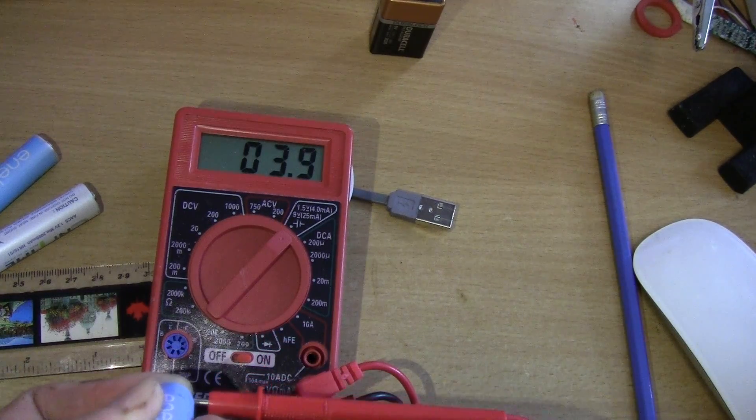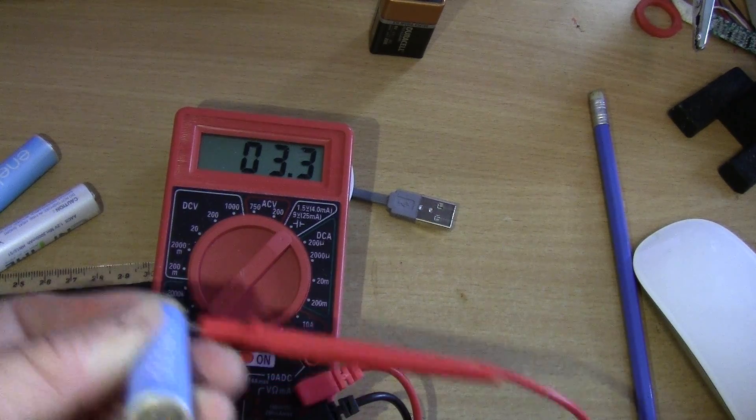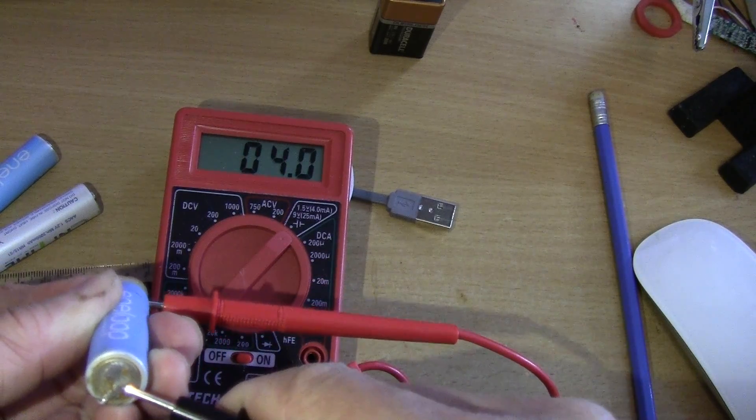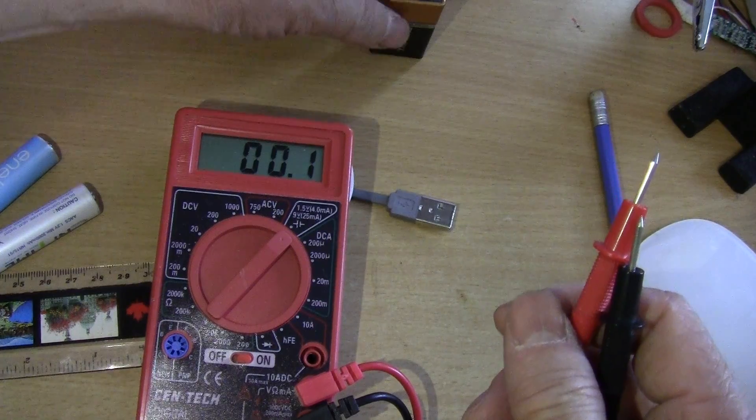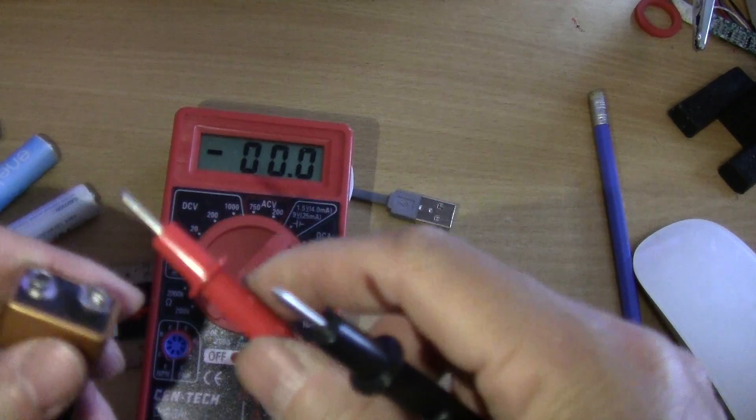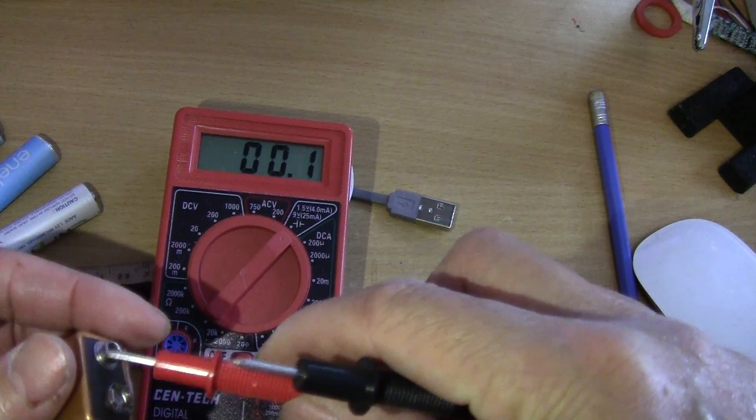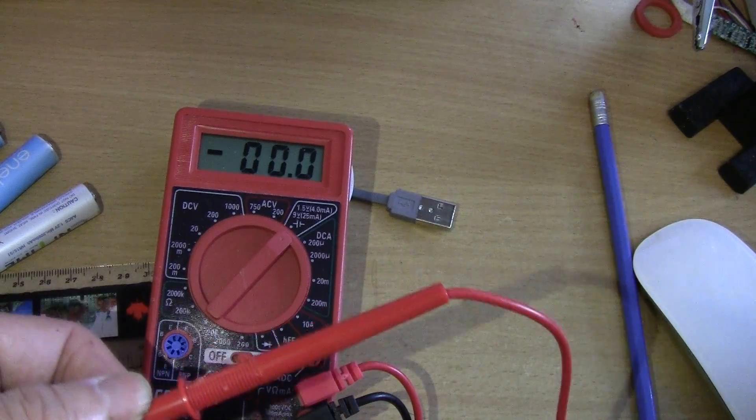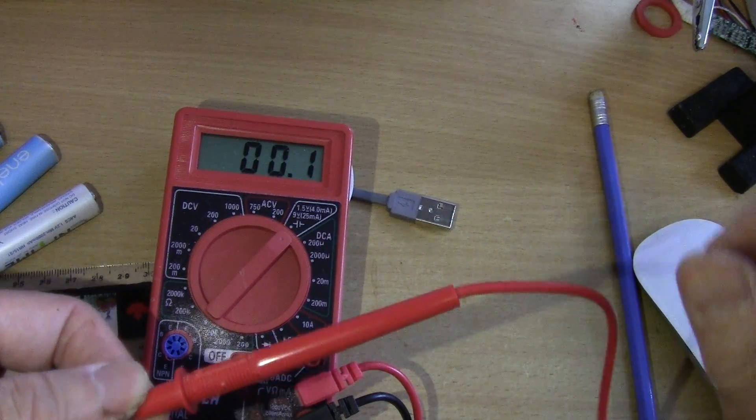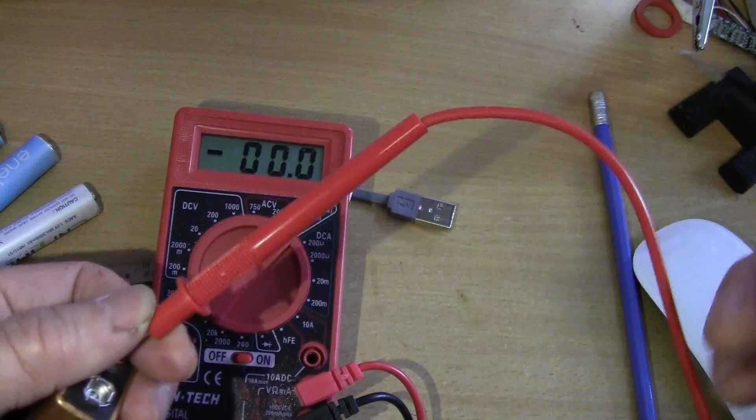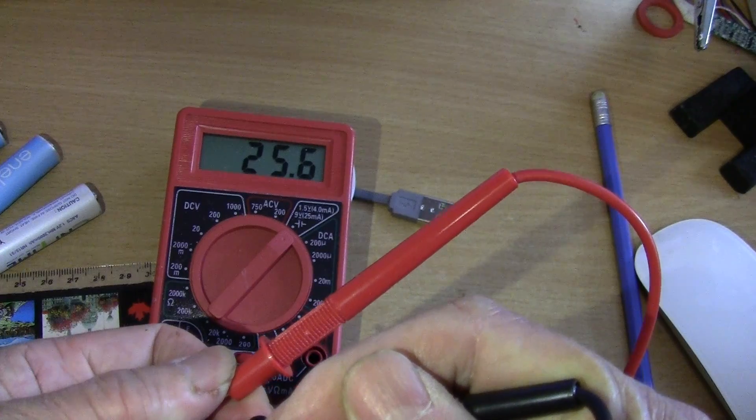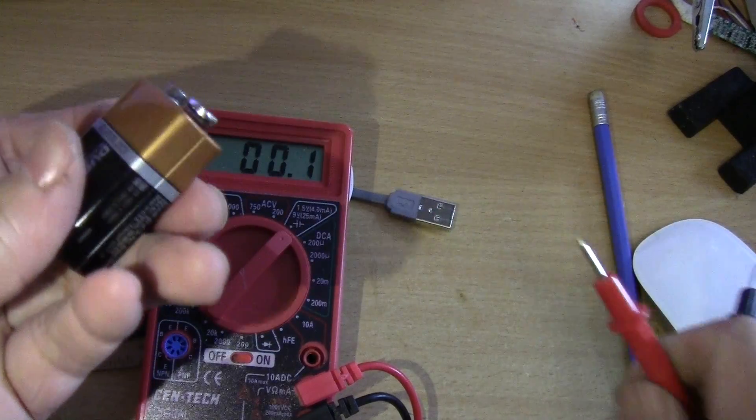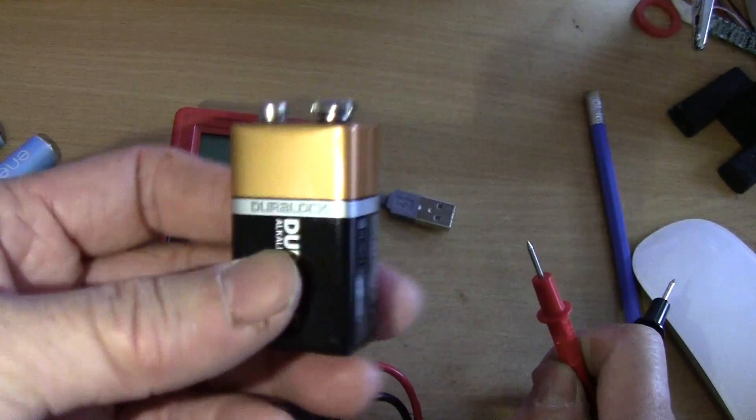I hope you can see that - 3.94, close enough. Okay, let's check the 9 volt battery. This is supposed to be 25 milliamp. Positive to positive, negative to negative - 25.6, so this is good because it's a new battery.